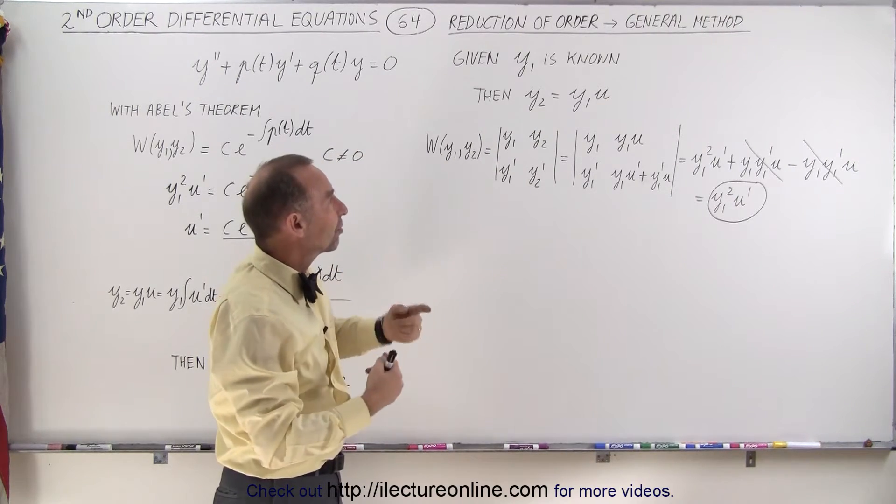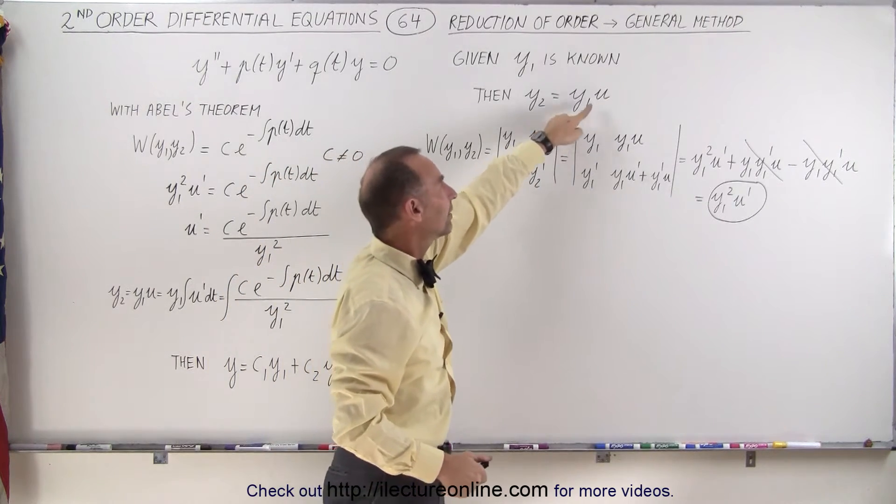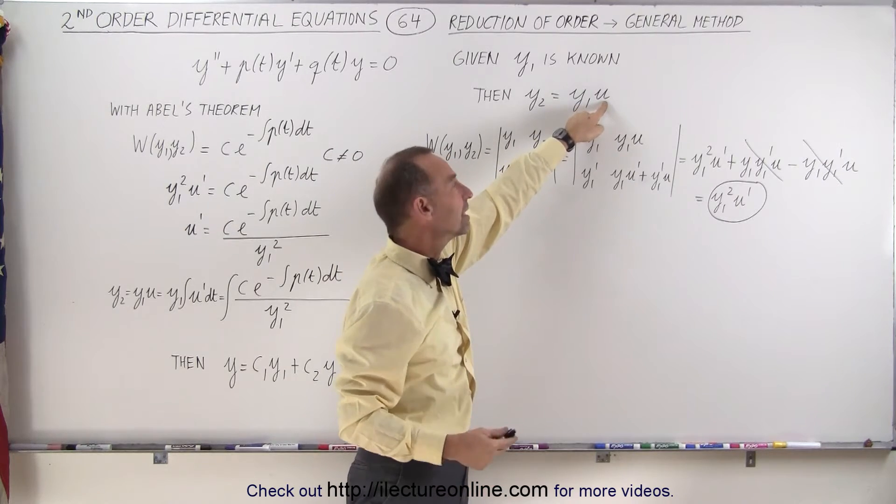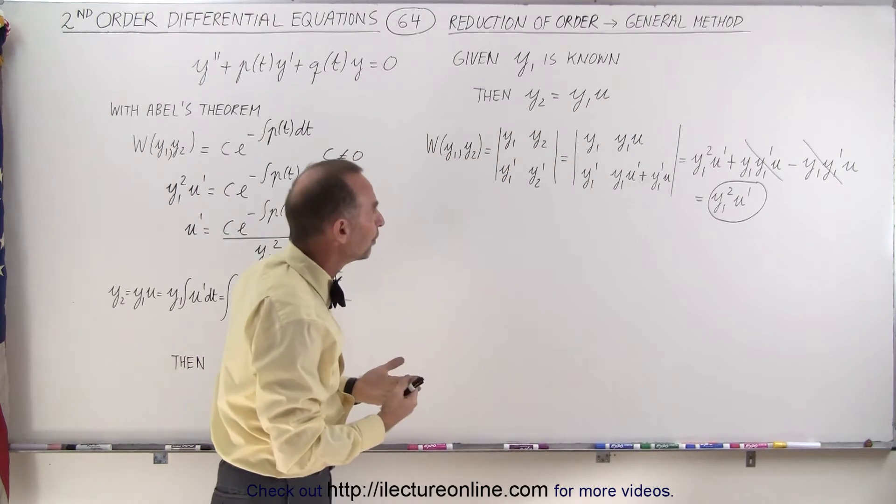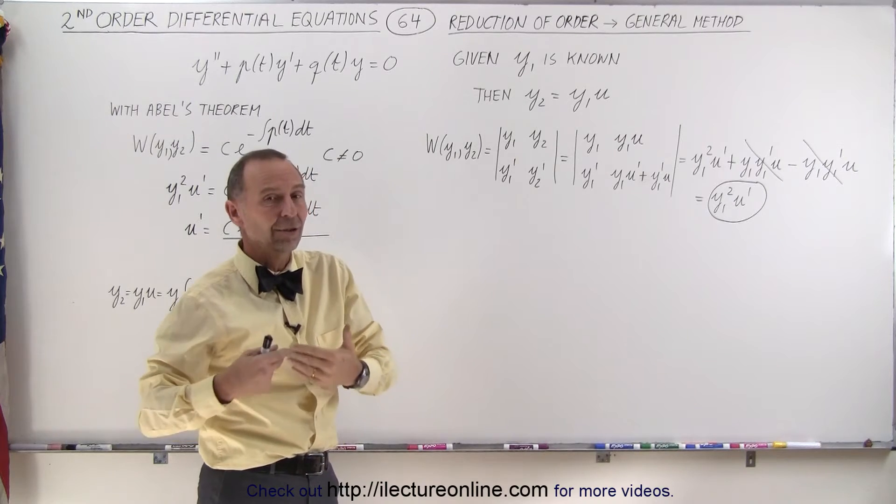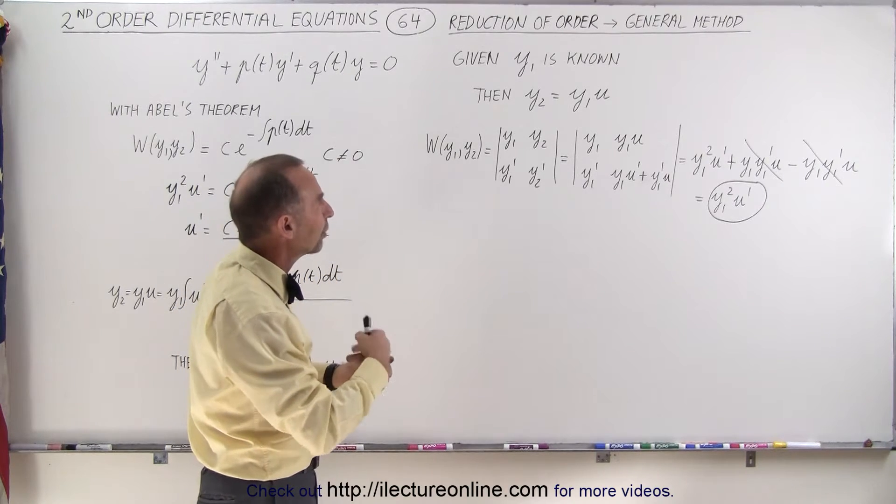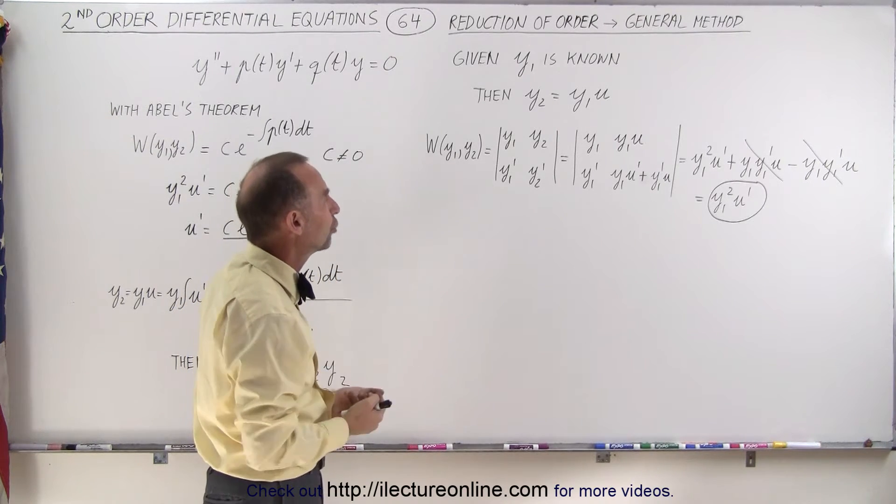Now, y2 is going to be expressed as a product of y1 times another function of t in this case, called u. We don't know what u is, that's what we're trying to do is find out what the value of u is so we can find y2.